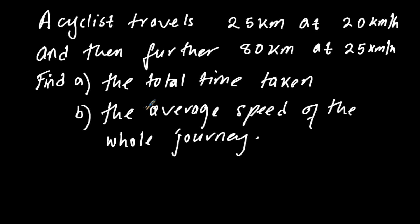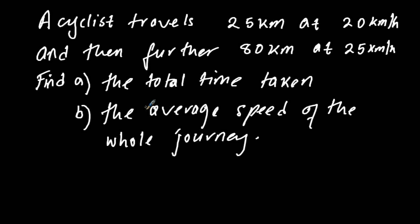Hello, our question is: a cyclist travels 25 kilometers at 20 kilometers per hour and then further 80 kilometers at 25 kilometers per hour. Find part a the total time taken, then part b the average speed of the whole journey.